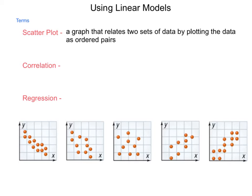A scatter plot is a graph that relates two sets of data by plotting the data's ordered pairs. If you're doing an experiment in science where you're measuring temperature over time, temperature is your dependent or your y variable, time is your independent or your x variable, and you can plot them on a graph.